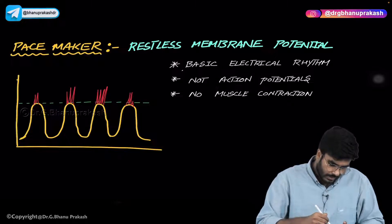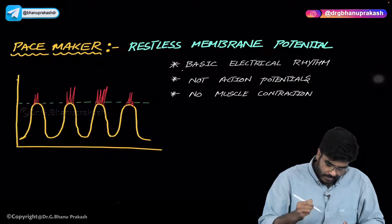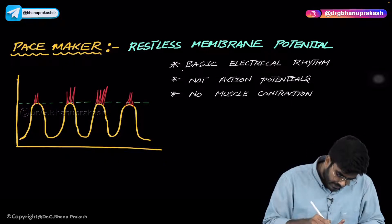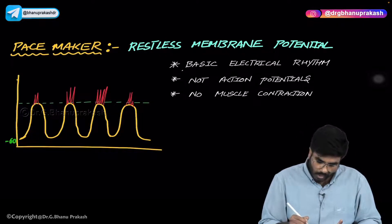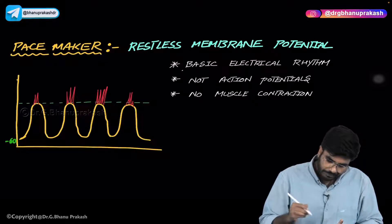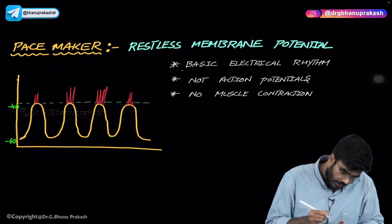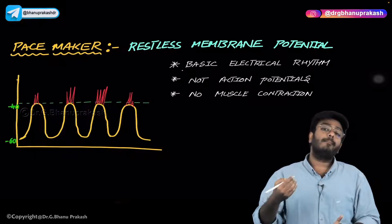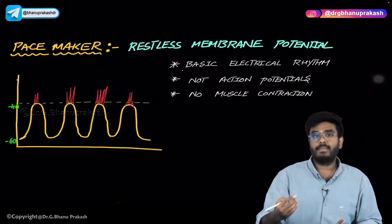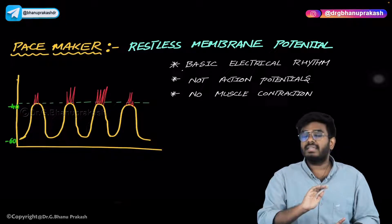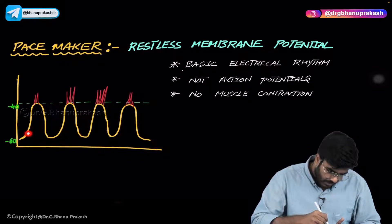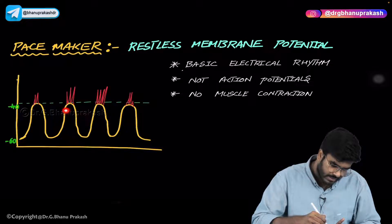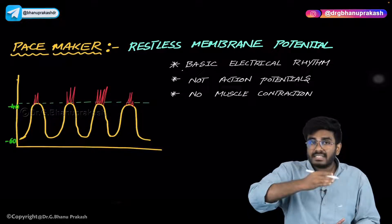The pacemaker cell normally has a potential of minus 60 millivolts. What happens is that from minus 60, the potential goes to minus 40. Whenever the sympathetic nervous system is dominating — for example, when you haven't eaten any food — the potential moves from minus 60 to minus 40, then falls back again. This oscillation keeps repeating, giving a state of restlessness.